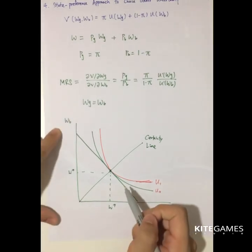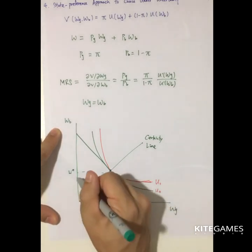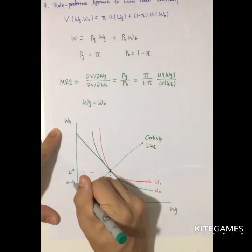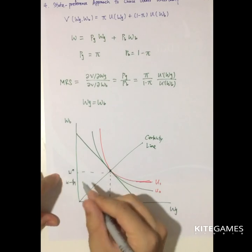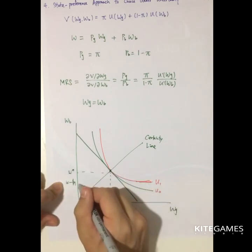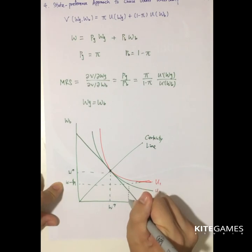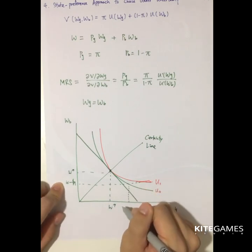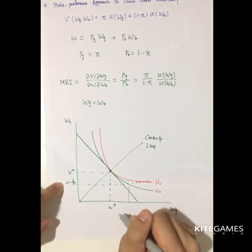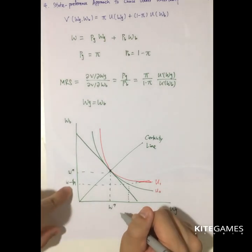if in state B, the bad time, you have a chance that your wealth will reduce by H. Then you can see for the green one, if you are told that you have a chance that your wealth decrease to W minus H in bad time.